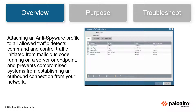Attaching an anti-spyware profile to all allowed traffic detects command and control traffic, or C2, initiated from malicious code running on a server or endpoint, and prevents compromised systems from establishing an outbound connection from your network.